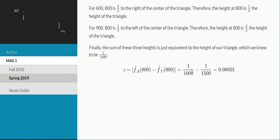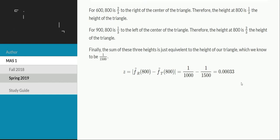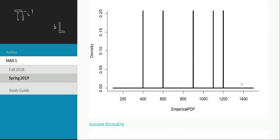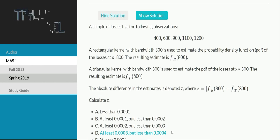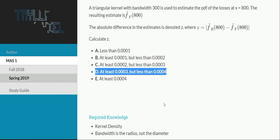Then, just pulling everything together, again, we're interested in calculating z, which is the absolute value difference between our two estimations at 800. So here we're just doing 1 over 1000, subtract 1 over 1500, and that equals 0.00033. So we can scroll back up, and see that falls in the range of answer D.